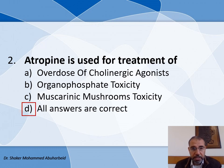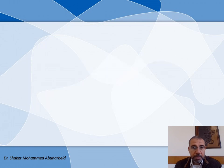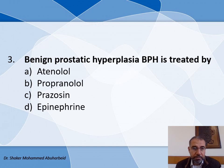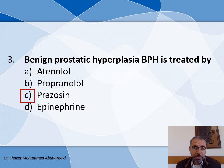The third question: For benign prostatic hyperplasia (BPH), which drug is used for treatment? The choices are: A) Atenolol, B) Propranolol, C) Prazosin, and D) [not specified]. The main indication of Prazosin is the treatment of benign prostatic hyperplasia, so the answer is Prazosin.